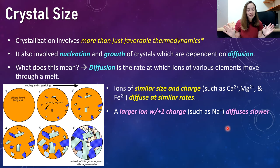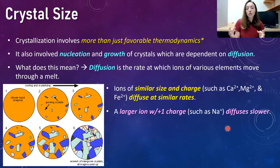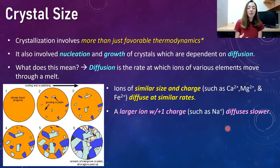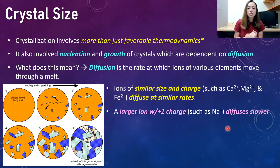Crystallization also involves what's called nucleation and growth of crystals, which are dependent on something called diffusion rates. Diffusion rates are the rates at which ions of various elements can move through a melt. Ions of similar size and charge, such as calcium 2+, magnesium 2+, and iron 2+, diffuse at similar rates. However, a larger ion with a different charge, such as sodium +1, diffuses slower. So ions move at different rates through melts, causing their diffusion rates to be different.